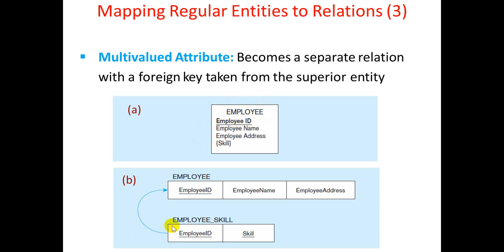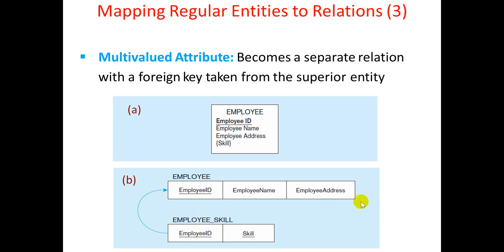The main entity set has a one-to-many relationship with the multi-valued attribute table. For example, employee ID 100 can have two language skills: Hindi and English. So employee ID 100 appears twice in the skill table — once with Hindi and once with English. The employee ID serves as a foreign key in the skill table.